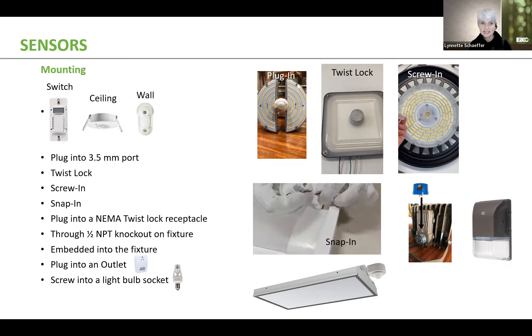And then the rest of these is basically they can twist lock into the NEMA receptacle. They can even screw onto an end of a fixture via a half inch knockout. Sensors can even be embedded into fixtures like this wall pack showing here featuring a dusk to dawn sensor. And there are some that plug into outlets. There's even some sensors that screw into a fixture socket. So lots of different ways to incorporate sensors into your project. There's no doubt about it.